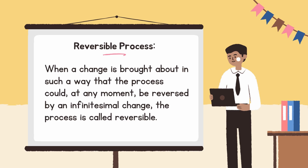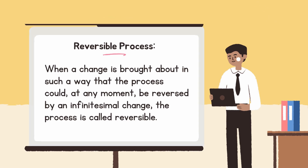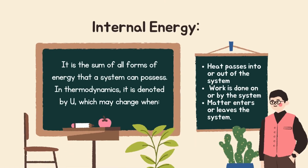The process is called reversible. Next topic is internal energy — it is the sum of all forms of energy that a system can possess. In thermodynamics, it is denoted by U, which may change when heat passes into or out of the system, work is done on or by the system, or matter enters or leaves the system.